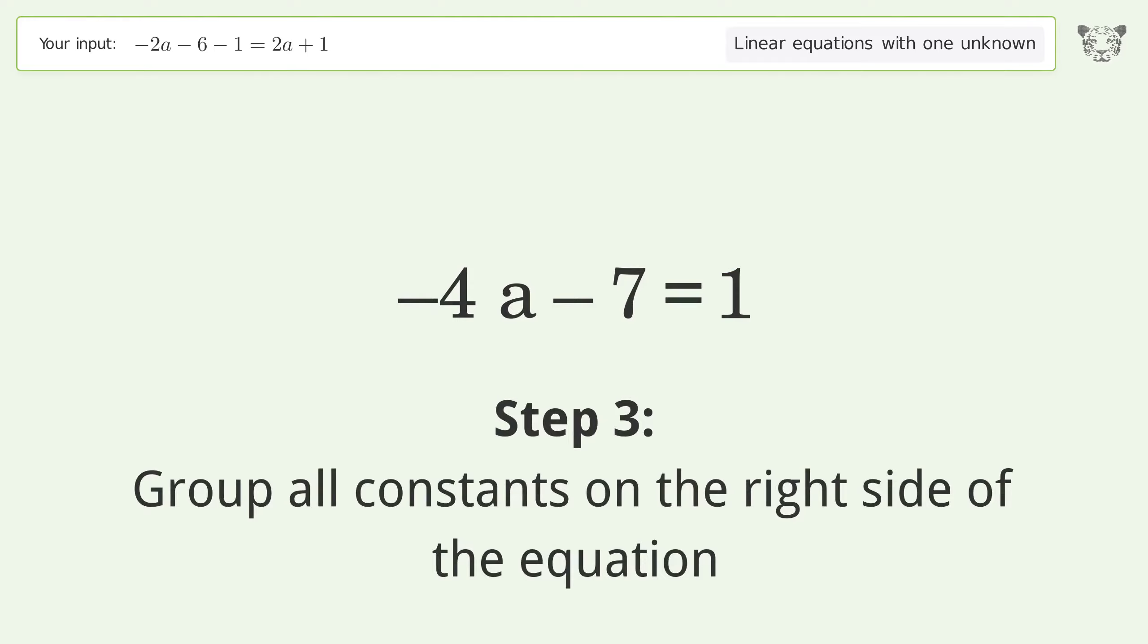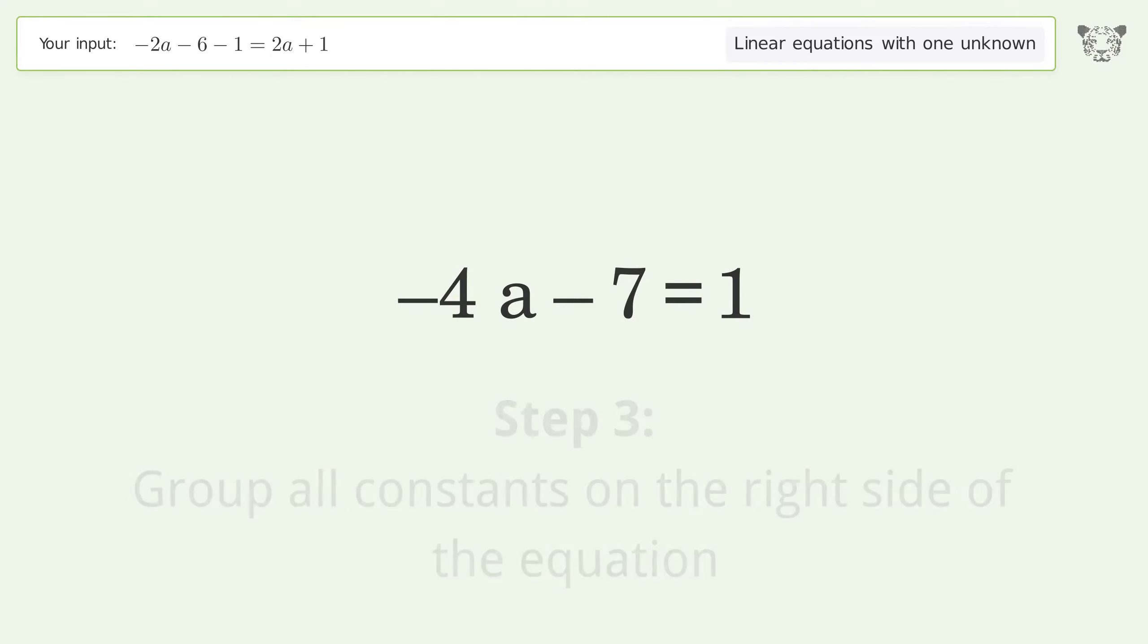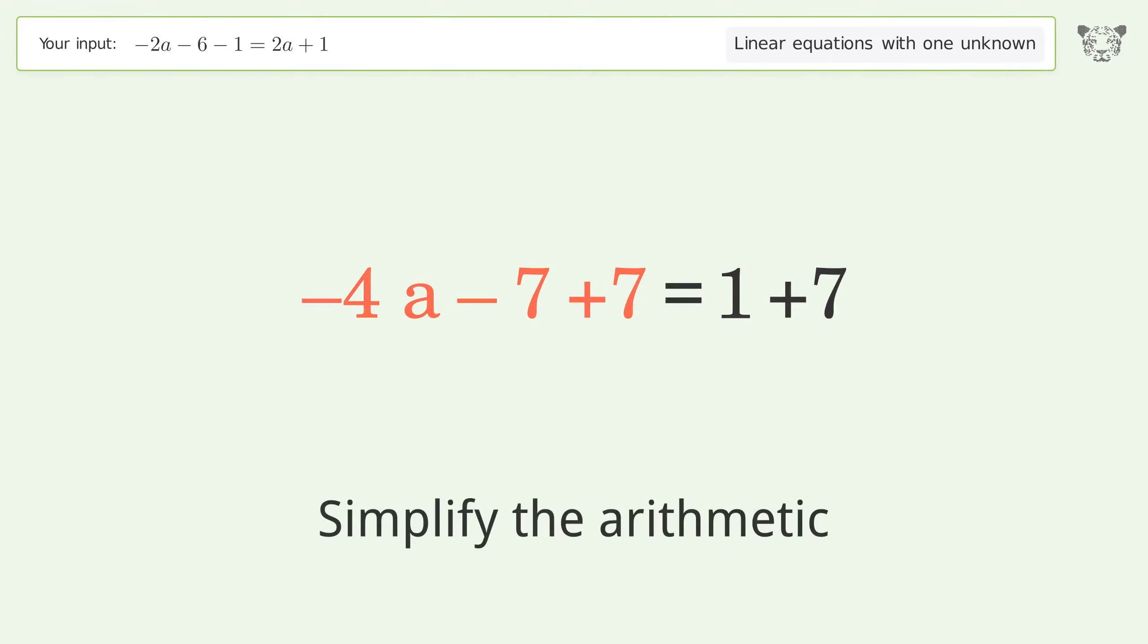Group all constants on the right side of the equation. Add 7 to both sides. Simplify the arithmetic.